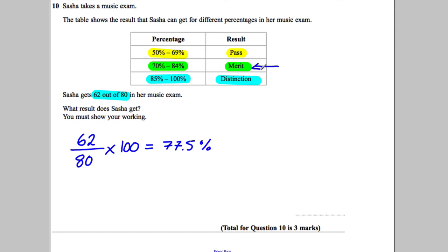So that means Sasha clearly falls within this region here. So what result does she get? Sasha gets a merit.